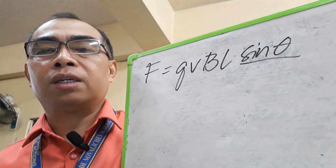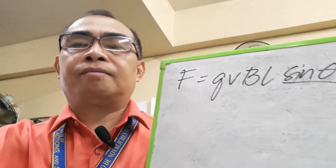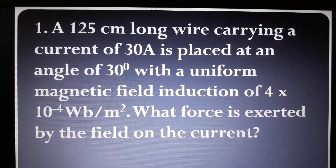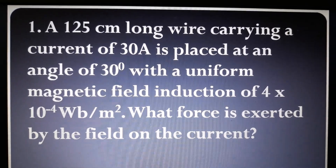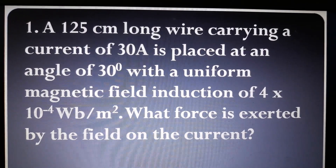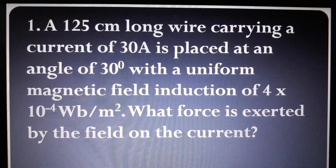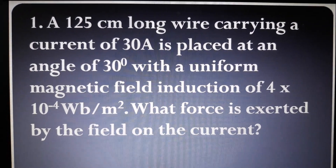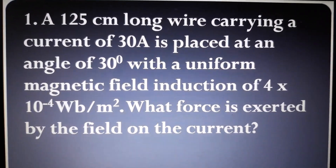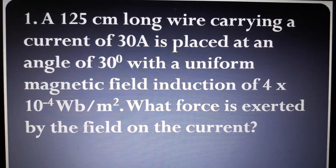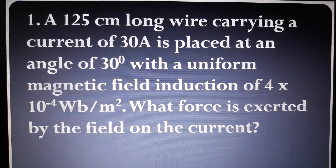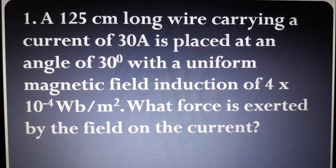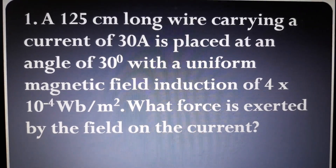Problem number 1: A 125-centimeter long wire carrying a current of 30 amperes is placed at an angle of 30 degrees with a uniform magnetic field induction of 4 × 10⁻⁴ Weber per square meter. What force is exerted by the field on the current?